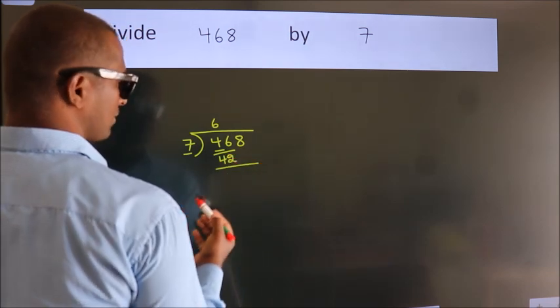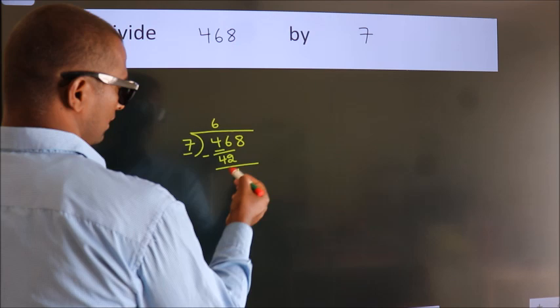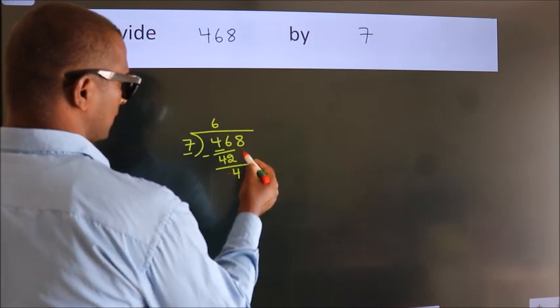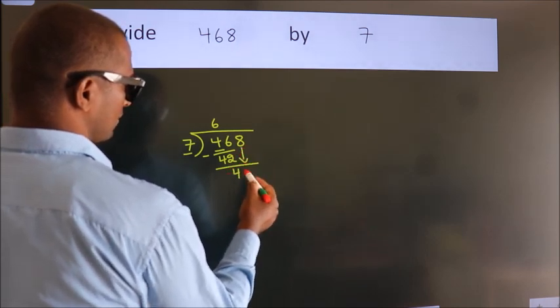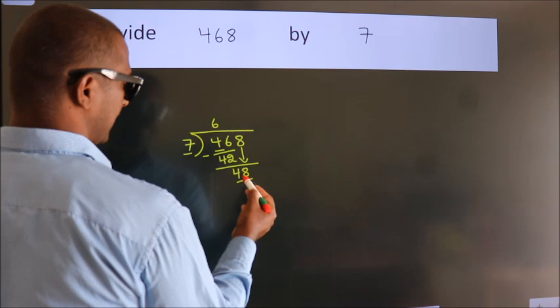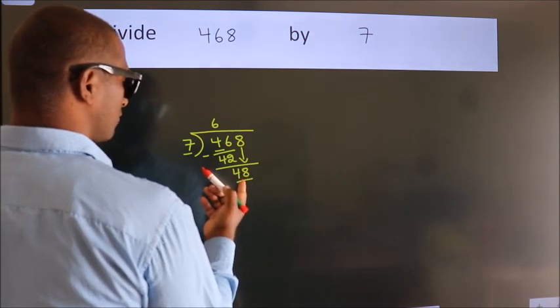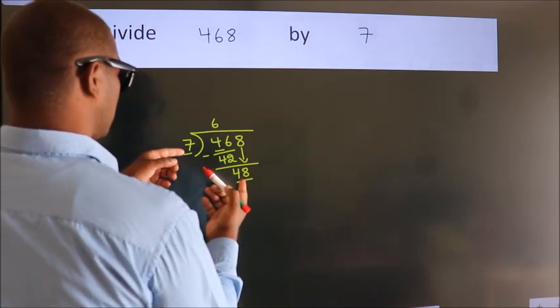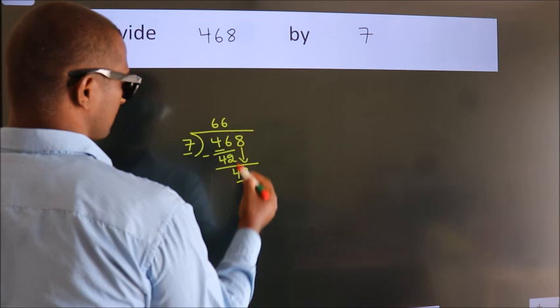Now we should subtract. We get 4. After this, bring down the beside number. So, 8 down. So, 48. A number close to 48 in the 7 table is 7 times 6, 42.